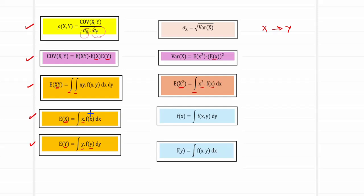We need E[X], which involves f(x), the marginal density function of X. The marginal density f(x) is obtained by integrating the joint PDF with respect to y, and similarly f(y) is obtained by integrating the joint PDF with respect to x. Once we complete these integrations and get these quantities, we are ready to start the problem.